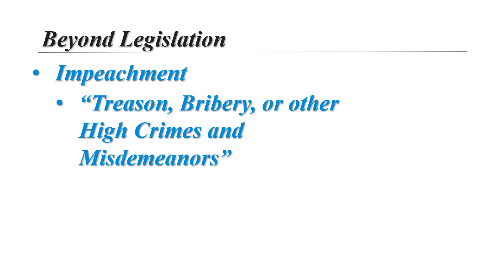No president in history has ever been convicted of an impeachable offense. There were three presidents who had articles of impeachment forwarded to the Senate where they actually had a trial: Andrew Johnson, Bill Clinton, and Donald Trump. Another president, Nixon, was never officially impeached. He was on the verge of impeachment, and he knew that if it went to the Senate for trial he would lose and thus become the very first president to be removed from office. So he beat them to the punch and resigned.